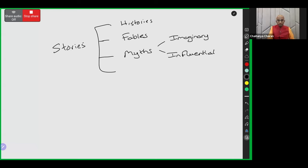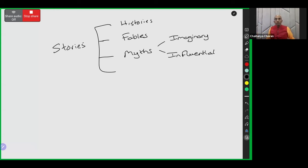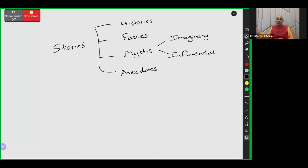That's why, when books are written on the Ramayana and published in mainstream publishing houses, they classify them in the domain of mythology. We can debate whether that should be the classification, but that's the existing classification right now. Apart from that, there are anecdotes — things which we have personally experienced: 'this happened to me here, this happened there.'